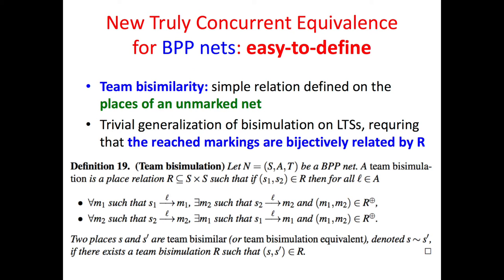We propose a new, truly concurrent equivalence for BPP nets, which is easy to define. Team bisimulation is a simple relation defined on the places of an unmarked net. This is a trivial generalization of bisimulation over labeled transition systems, requiring that the reached markings are bijectively related by R.